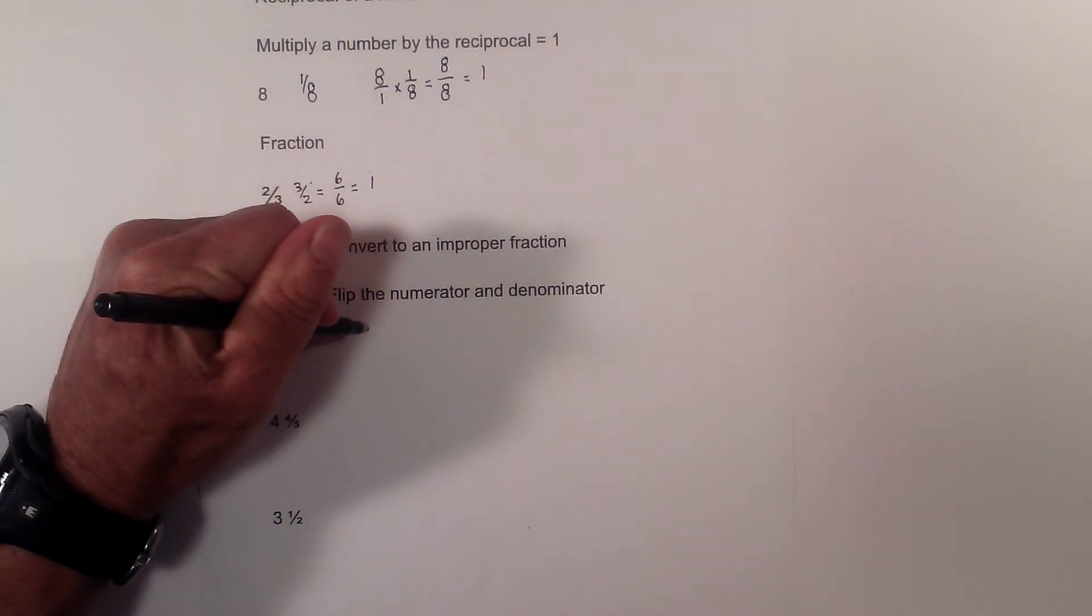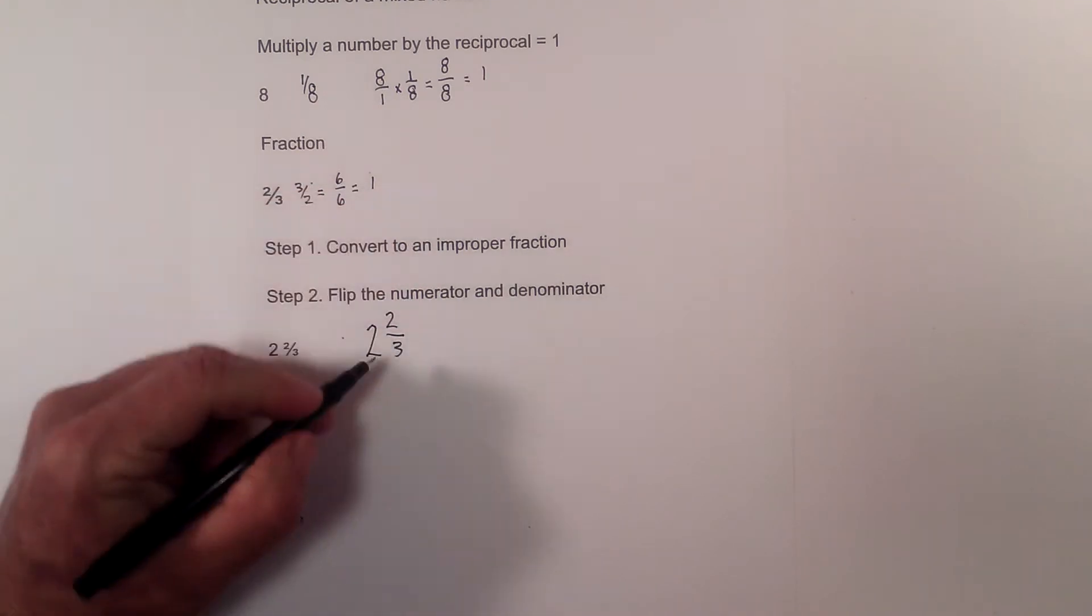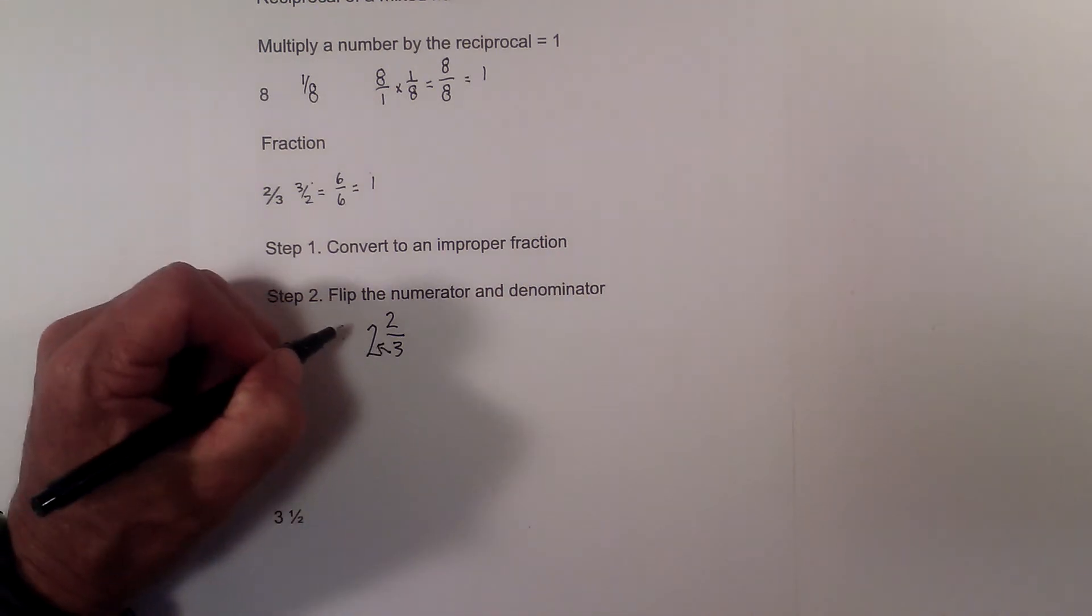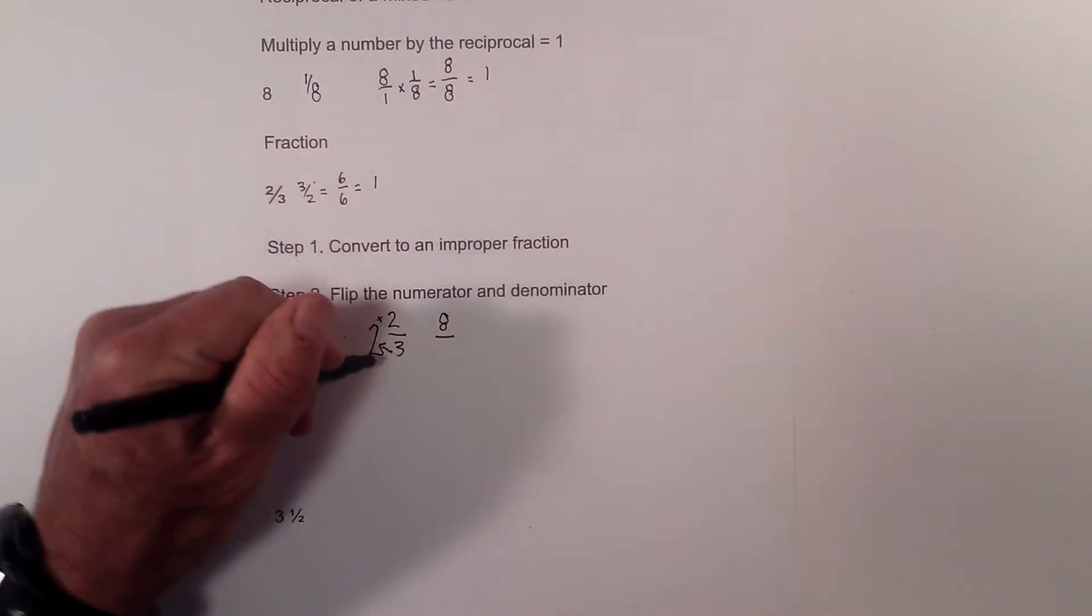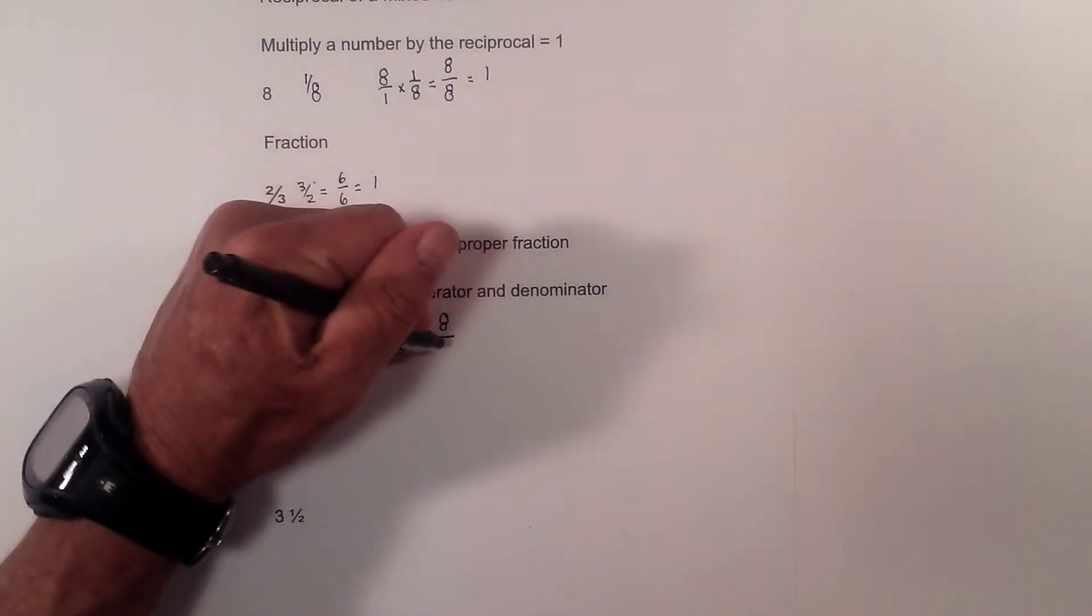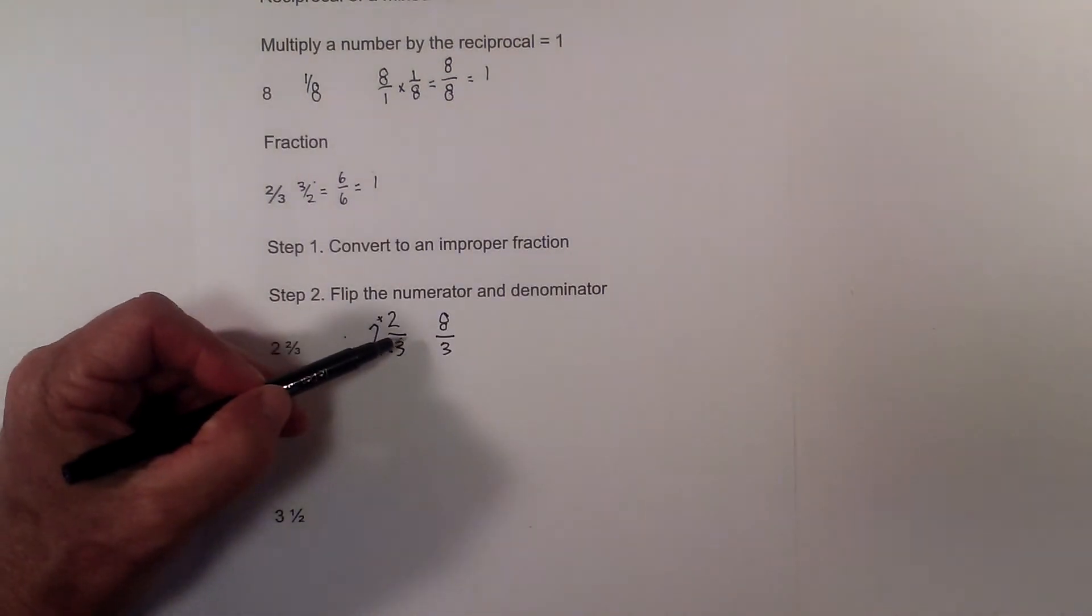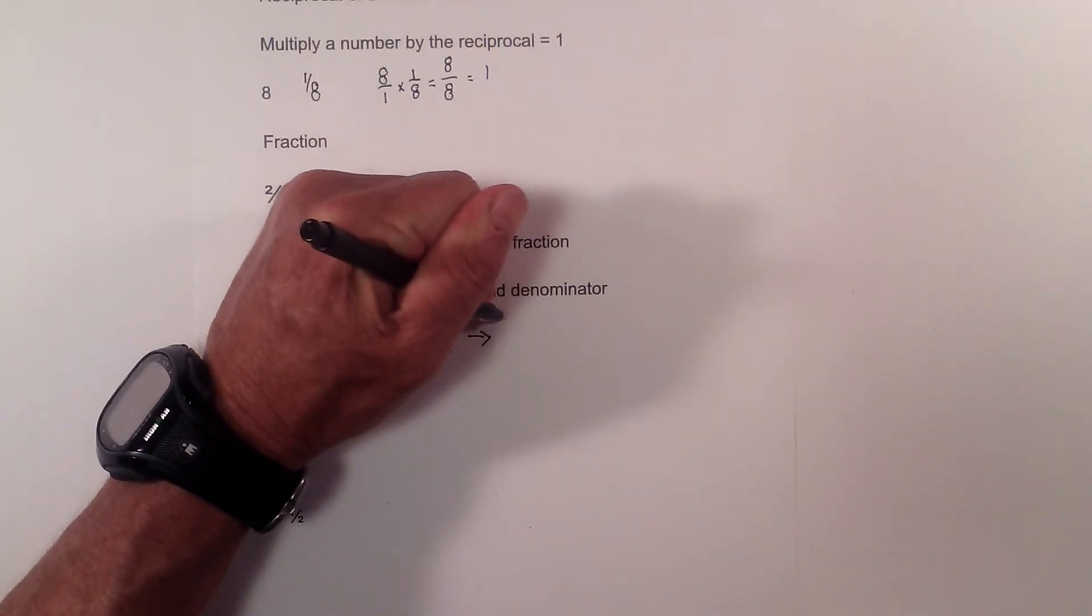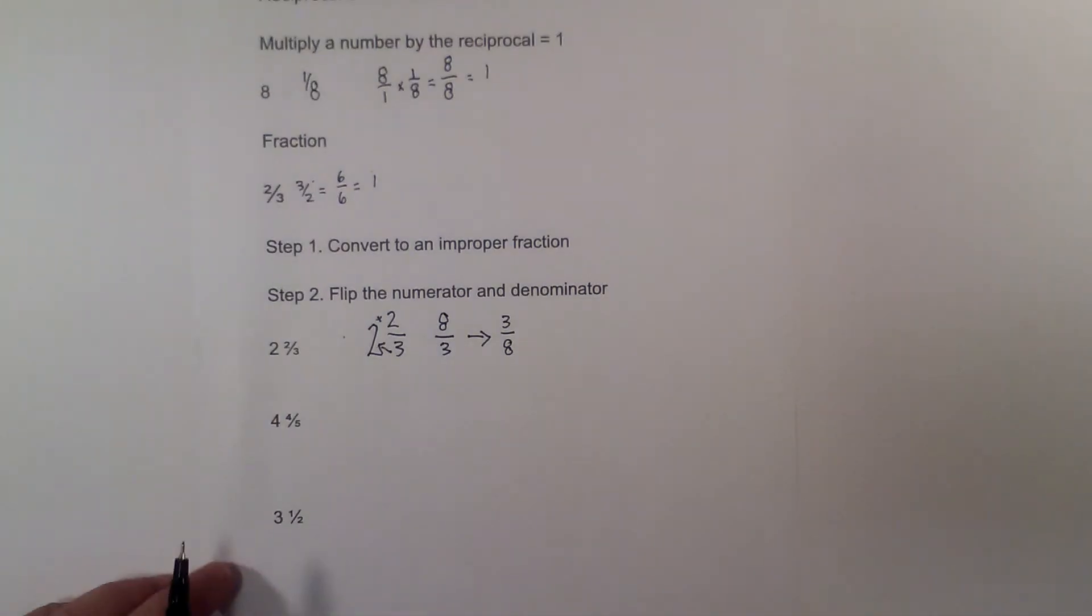So we have 2 and 2 thirds. And to create an improper fraction you go 3 times 2, which is 6, and then add the 2, and that is 8. And then you always keep the 3 of the fraction, bottom number of the fraction. And so now in order to create the reciprocal you just flip it over. So we have 3 over 8.